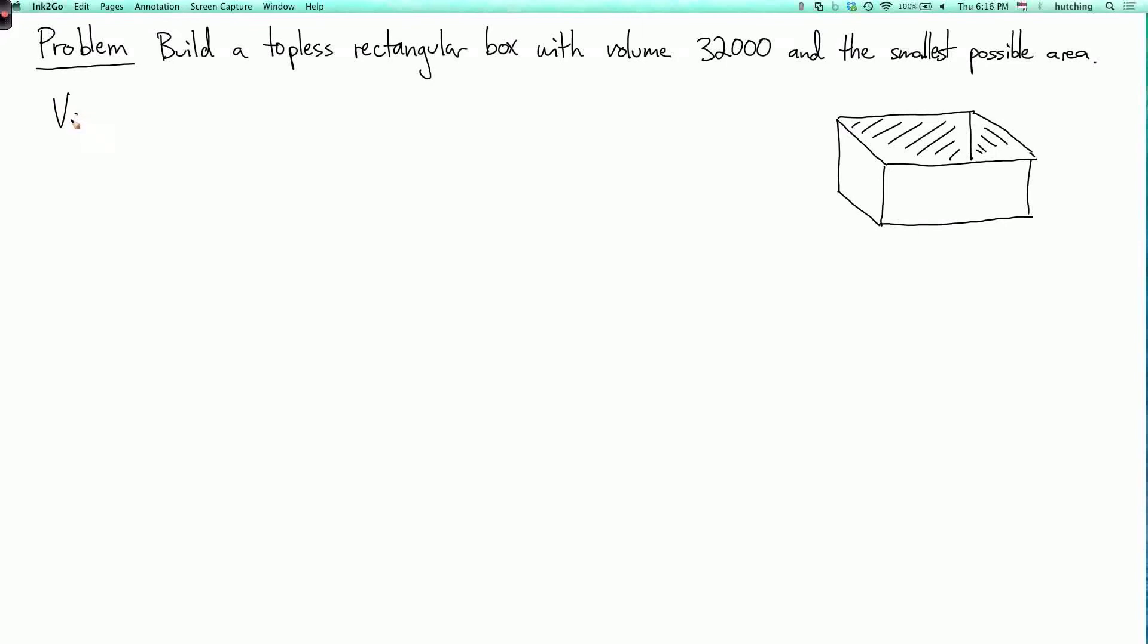So what's the volume? Well, to write a mathematical formula for this, we need to give names to the variables involved, and those are the dimensions of the box. So let's call these x, y, and z. So x will be the width of the box, y will be the depth of the box, and z will be the height of the box. So the volume is just xyz. Now this is what's constrained. We're constraining it to equal 32,000. So let's call it g of x, y, z.